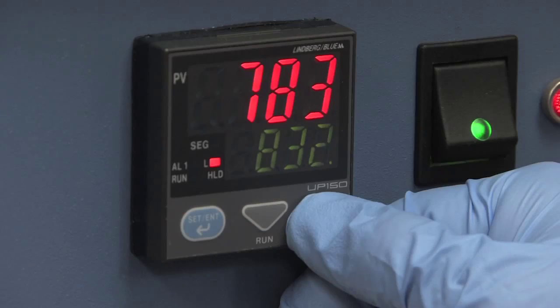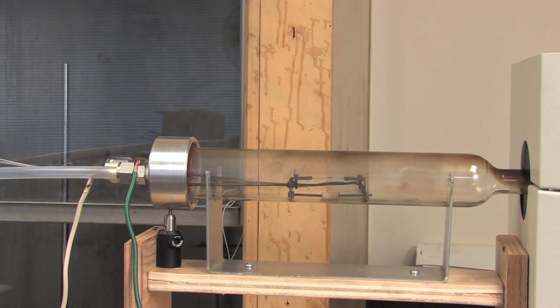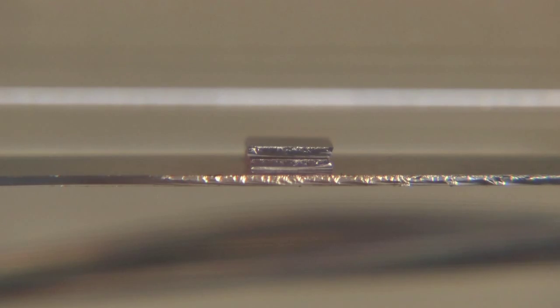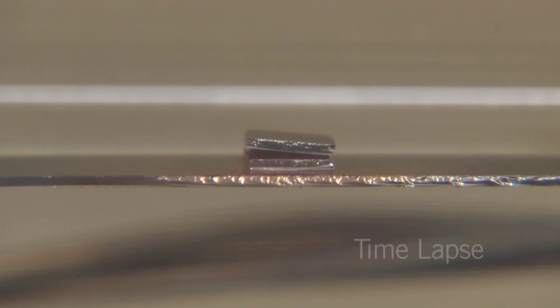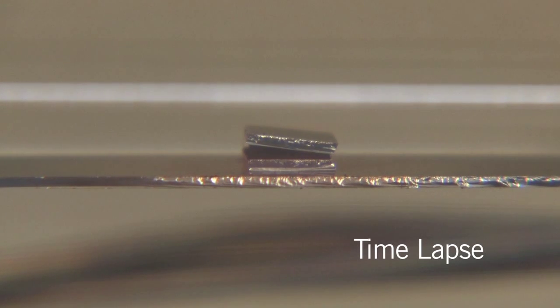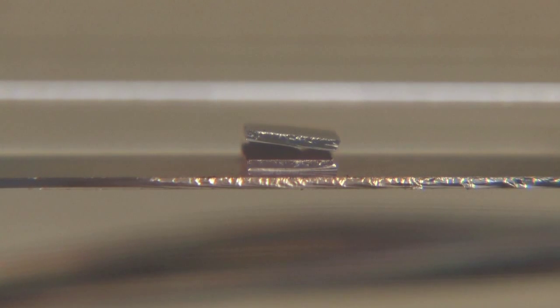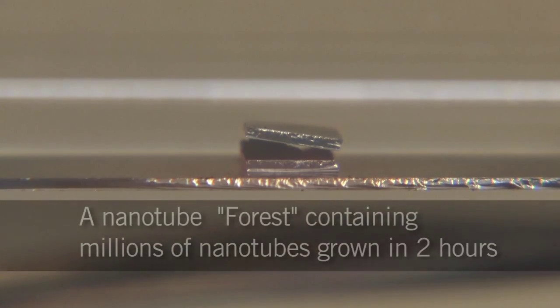Depending on the flow rate and composition of the gas or the temperature, we can control the growth rate. We heat up the substrate, break down the gases, and these broken-down gases get deposited and grow nanostructures like carbon nanotubes.